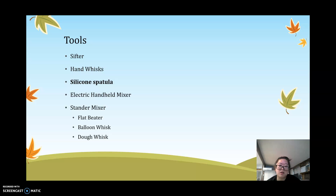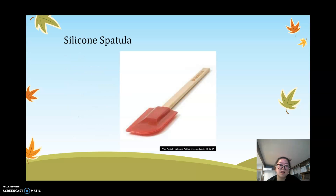Next is the silicone spatula. A silicone spatula is mostly for mixing wet and dry ingredients. It's not recommended for creaming butter and sugar because it doesn't beat in air the same way a hand whisk does, as it's flat. Conversely, using a whisk to mix wet and dry ingredients would burst the air bubbles you worked hard to create. A silicone spatula is used after creaming, when mixing the dry and wet ingredients together.